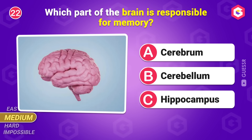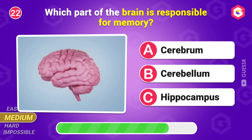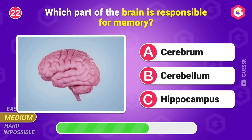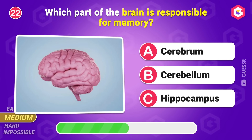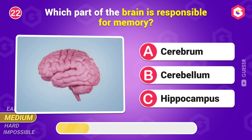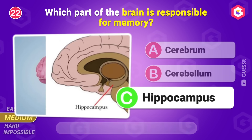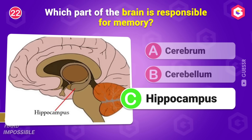What is the heaviest naturally occurring element? Uranium. Which part of the brain is responsible for memory? Hippocampus.